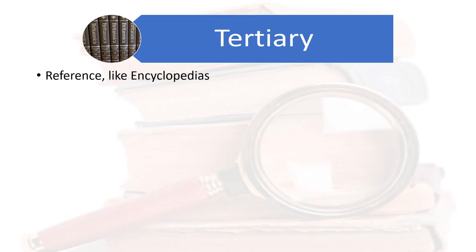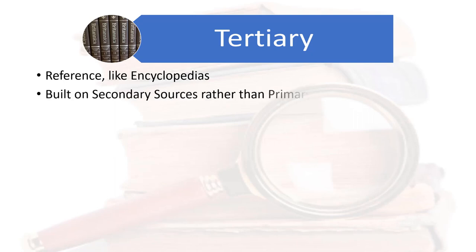Tertiary sources, also called reference sources. Encyclopedias are the most prominent form of tertiary or reference sources. They are, in fact, something of the Platonic ideal of a tertiary source. The principal characteristic of a tertiary source is that it's built on secondary sources, though a primary source or two might creep in occasionally. And as we'll see, secondary sources offer interpretations of primary sources — synopses and glosses on the information in primary sources.